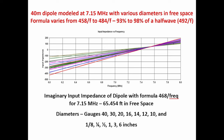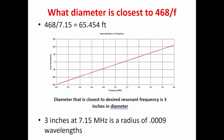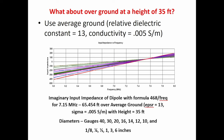Which diameter is closest to 468? It turns out it's three inches. Three inches is where the 468 formula works. So if you're building a three-inch diameter dipole, you're going to be right on. That's actually 0.0009 wavelengths, pretty close to the standard 0.001 used for testing. Over average ground at a typical height of 35 feet, it's pretty much the same — three inches is still closest.